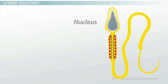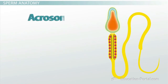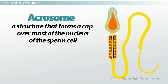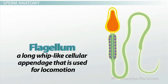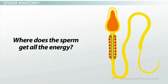The ovum will provide the other half of the genome along with pretty much all of the cytosol, cell membrane, and cellular organelles. The acrosome is a structure that forms a cap over most of the nucleus of the sperm cell. The main job of the acrosome is to penetrate the outer layers of the ovum so that the sperm can get inside. The flagellum is a long whip-like cellular appendage that is used for locomotion. A sperm cell uses its flagellum in a whip-like fashion, lashing it back and forth to propel the sperm forward.